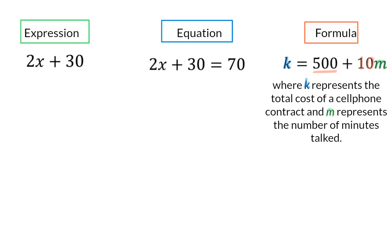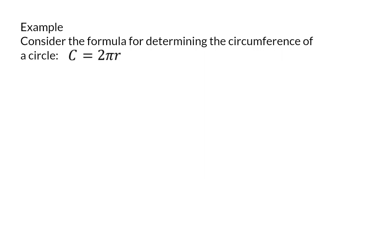Let's have a look at how we can use our knowledge on equations in formulas. Consider the formula for determining the circumference of a circle. The circumference is equal to 2 pi radius.